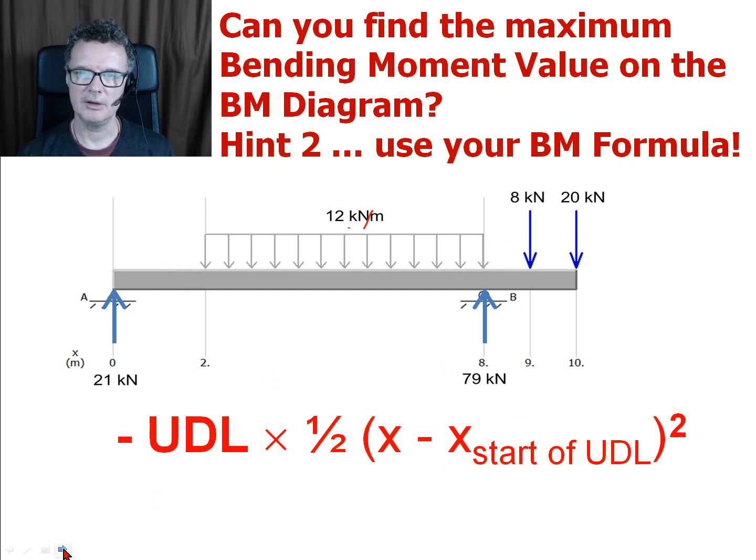The second hint is, well I know what the location is going to be so what am I going to do to work out the actual value? You go back and use my formula. When we go through the UDL we're going to use this formula: minus the UDL value times by half, open bracket x take away the start location of the UDL close bracket, and squared.